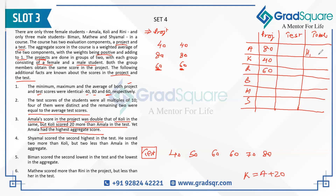Amala's aggregate is ranked H1 (highest). Shamla scored the second highest in the test, which is 70 — so Shamla gets 70 in the test. Shamla also scored two more than Coli but two less than Amala in the aggregate. So in aggregate ranking: Amala is H1, Shamla is somewhere below, and Coli is below Shamla by 2 aggregate points.